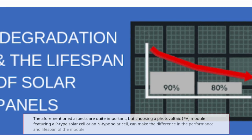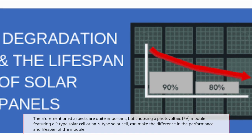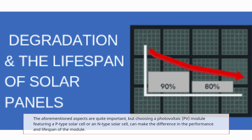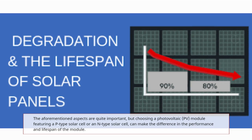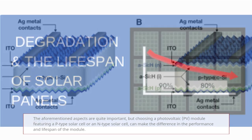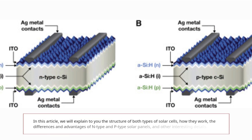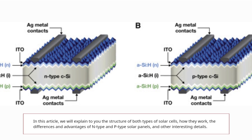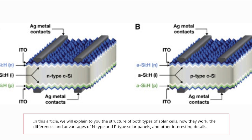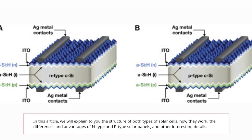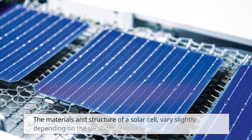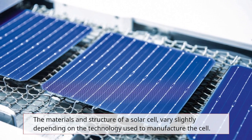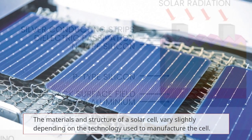The aforementioned aspects are quite important, but choosing a photovoltaic (PV) module featuring a P-type solar cell or an N-type solar cell can make the difference in the performance and lifespan of the module. In this article, we will explain the structure of both types of solar cells, how they work, the differences and advantages of N-type and P-type solar panels, and other interesting details. The materials and structure of a solar cell vary slightly depending on the technology used to manufacture the cell.